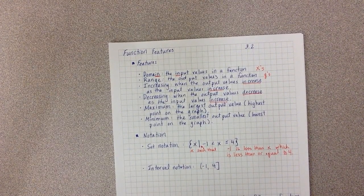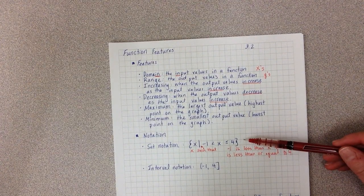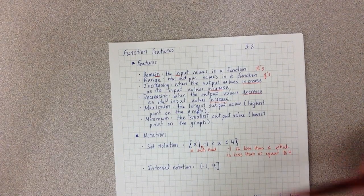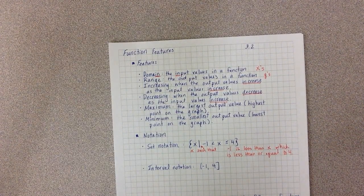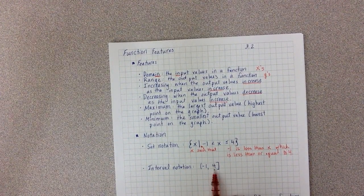Interval notation is the one that you probably haven't seen before. And I've written the exact statement above from set notation into interval notation. So we put the smallest value, the largest value, and then we either use parentheses or brackets.